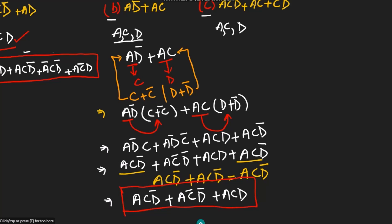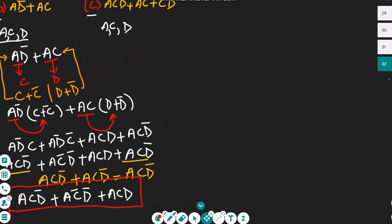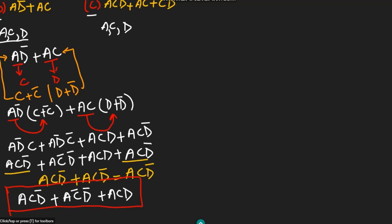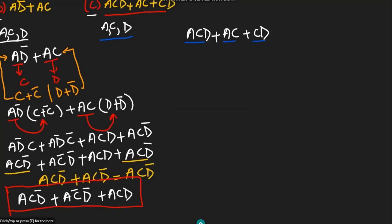That is the solution for part B. Now moving to the final part. The expression is acd + ac + cd, and the domain is {a, c, d}. We can see that in the term ac, d is missing, and in the term cd, a is missing. So we need to multiply ac by (d + d') and cd by (a + a').